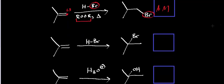And one more example of a hydrohalogenation, but this one with HBr is without the peroxide. This one — the bromide — adds to the more substituted position. So that makes this hydrohalogenation Markovnikov.